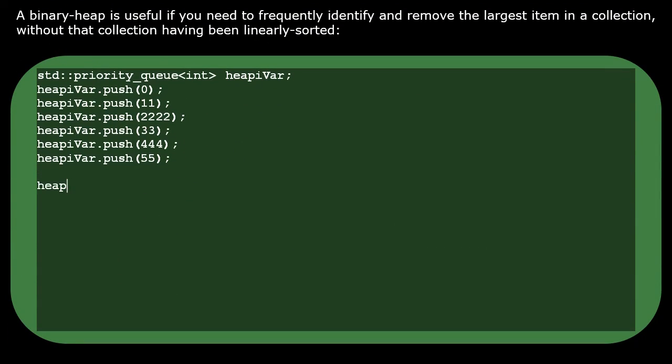A binary heap is useful if you need to be able to frequently identify and then remove the largest item in a collection repeatedly, without that collection being linearly sorted.